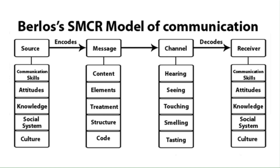Touching — the sense of touch can be used as a channel to communicate. For example, we touch by food, hugging our loved ones, and many more. Smelling can also be a channel to communicate — for example, perfumes and food. People can detect which food is being cooked by its smell.